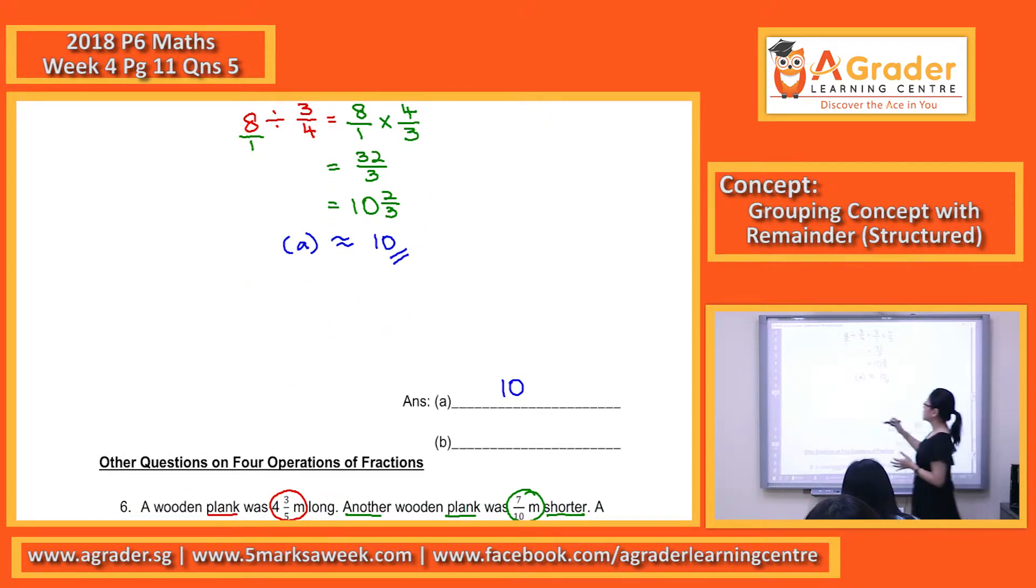Our method 1 is the easier method, where we find first the total length of the ribbon, the total length of the pieces that we have.